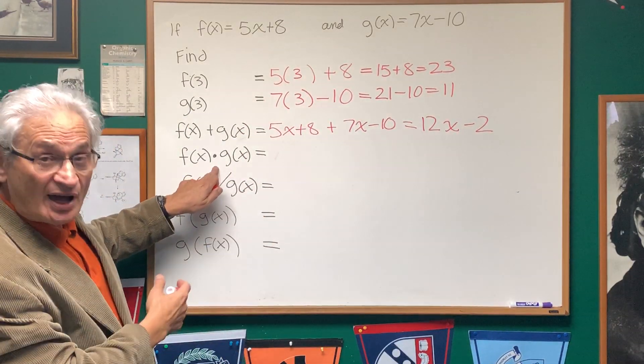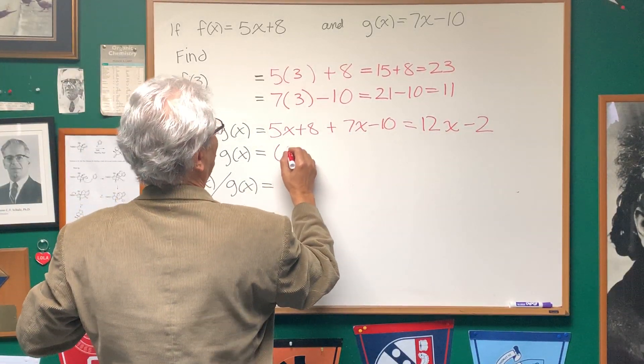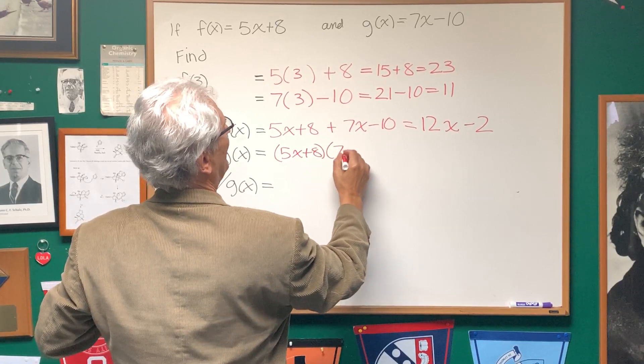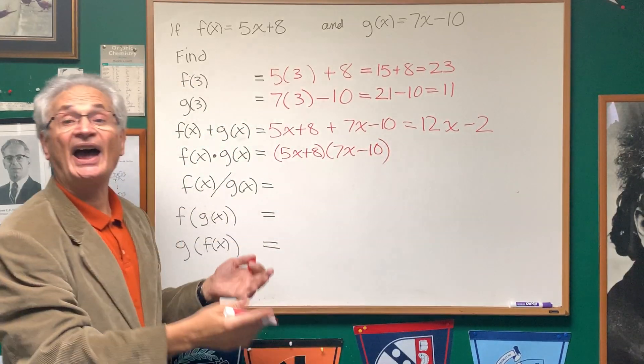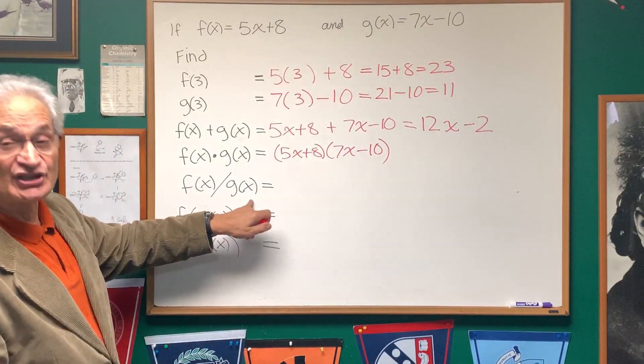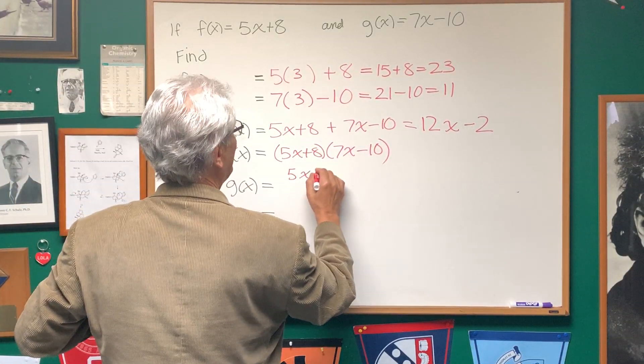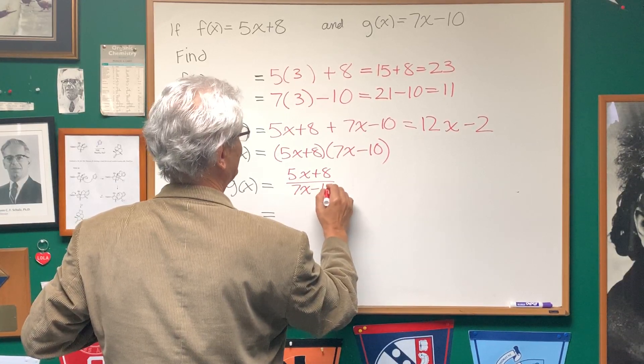And if we take the product of two functions, f(x) times g(x), we're not going to multiply this out, but we'll just write it in symbolic form. It's 5x plus 8 times 7x minus 10. And likewise, if it's the division of two functions, it's exactly as it's written. It's 5x plus 8 divided by 7x minus 10.